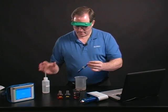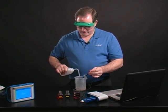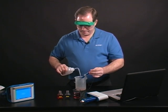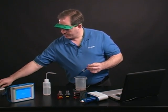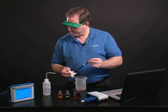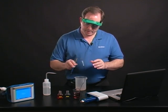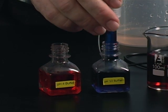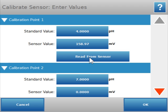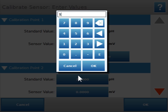Then I'll take that out and rinse it off thoroughly so I'm not mixing my buffers. I'll set that aside and blot once more. Now I'm going to put that in the pH 10 buffer. What I need to do on the screen is change 7 to 10 and say OK.